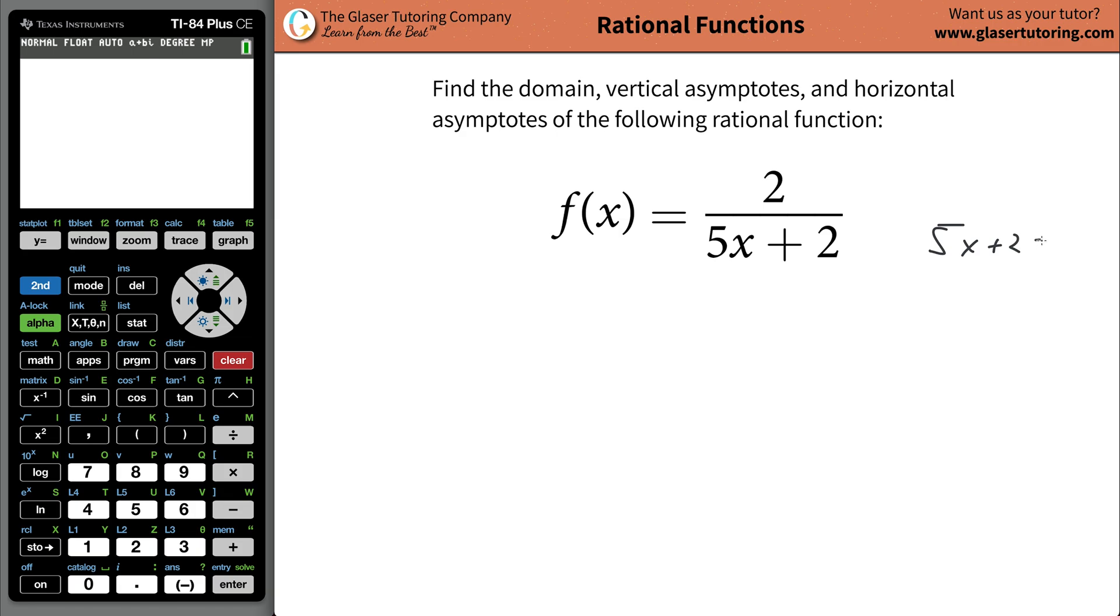You do 5x plus 2 equaling zero and now solve this for x, because if you solve it for x, you're going to find the value of x that sets this bad boy equal to zero. So subtract 2 from both sides, you're going to get 5x equals negative 2, divide 5 out from both sides, and now you get x equaling negative 2 fifths.